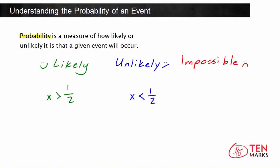Now, if you would call an event impossible, it means that there's absolutely no chance that that event will occur, and the probability of an impossible event is zero.